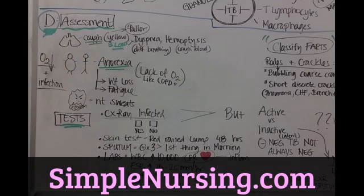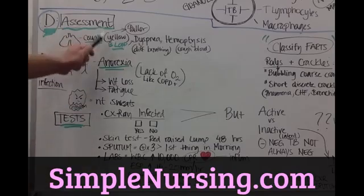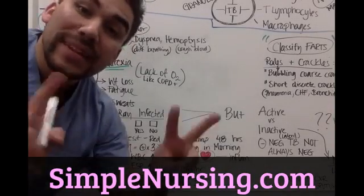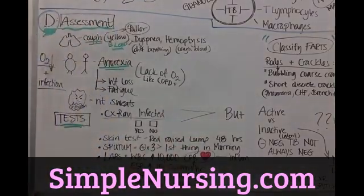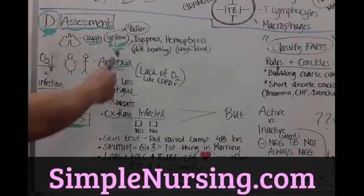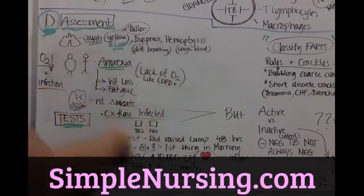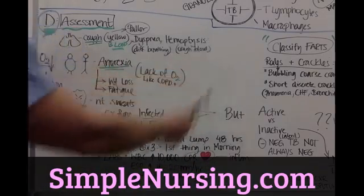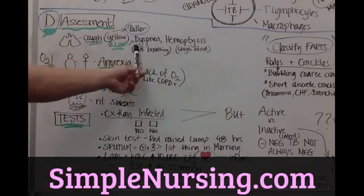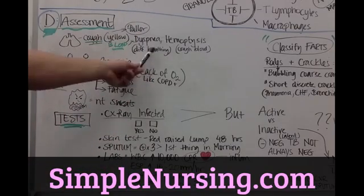Obviously a lot of people have a cough during flu season. But a yellow, bloody-tinged cough — and that's a great NCLEX tickler — bloody-tinged is a key word. So your patient has a bloody cough or bloody sputum, which is also called hemoptysis — a cough with blood. Obviously they're going to have difficulty breathing, dyspnea.